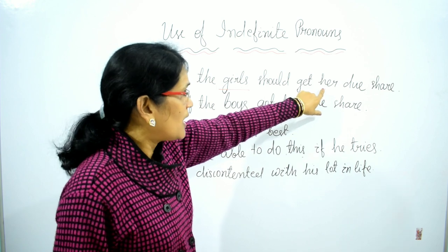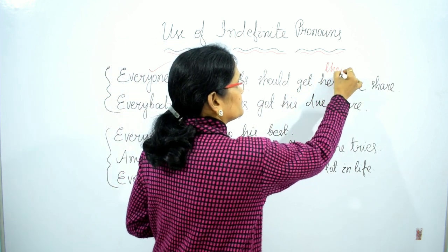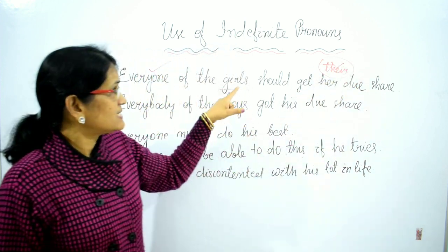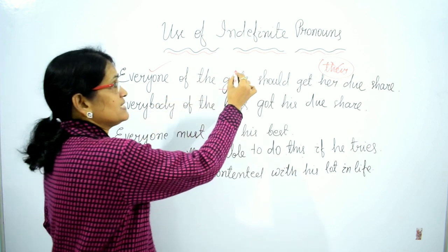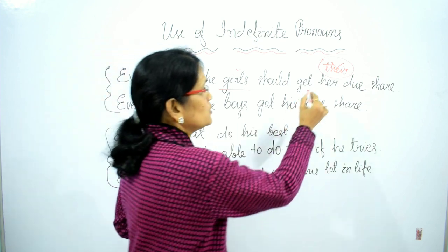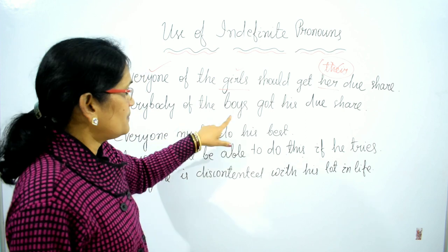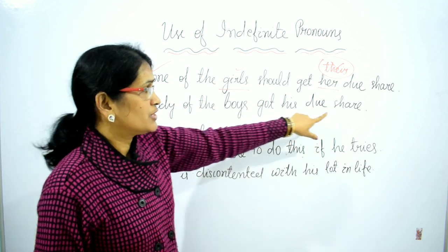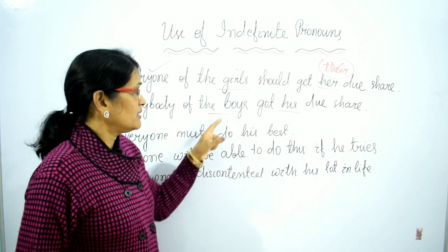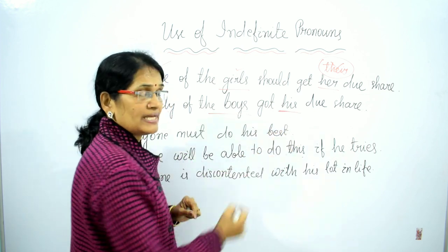So we use 'her' because it indicates feminine gender and a single person. Similarly: 'Everybody of the boys got his due share.' Here, 'boys' is plural and masculine gender, so we use 'his.'